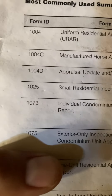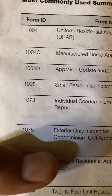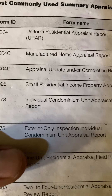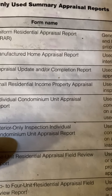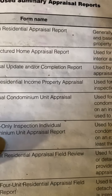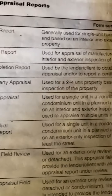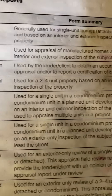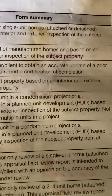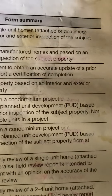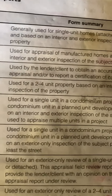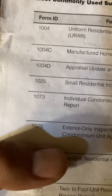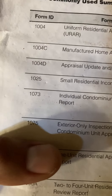Form 1025 is for Small Residential Income Property Appraisal. It's used for two to four unit property based on an interior and exterior inspection of the property.